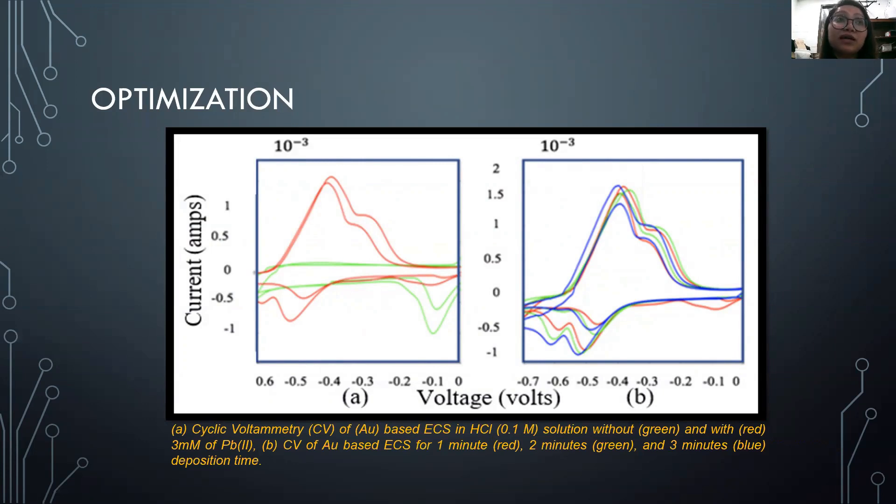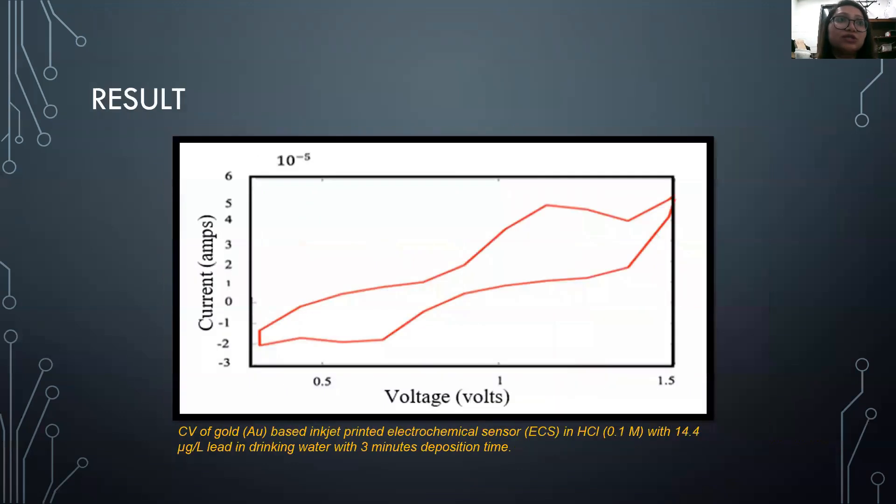We have also observed the CV analysis that contains the sample without lead, so we can see a clear pair of cathodic and anodic peaks in case of lead-contaminated drinking water. The right picture shows CV analysis for 3 millimolar lead-contaminated optimized drinking water in case of 1 minute, 2 minutes, and 3 minutes deposition time.